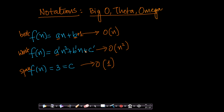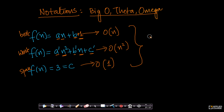Similarly, here a dash, b dash, c dash are constants. As n increases, n square increases much more than n, and hence that is n square. As n increases, 1 is a constant, and hence it is order of 1. Since this is a constant with 3 variables, it is order of 1. So we gave an intuitive definition of what O of n means.